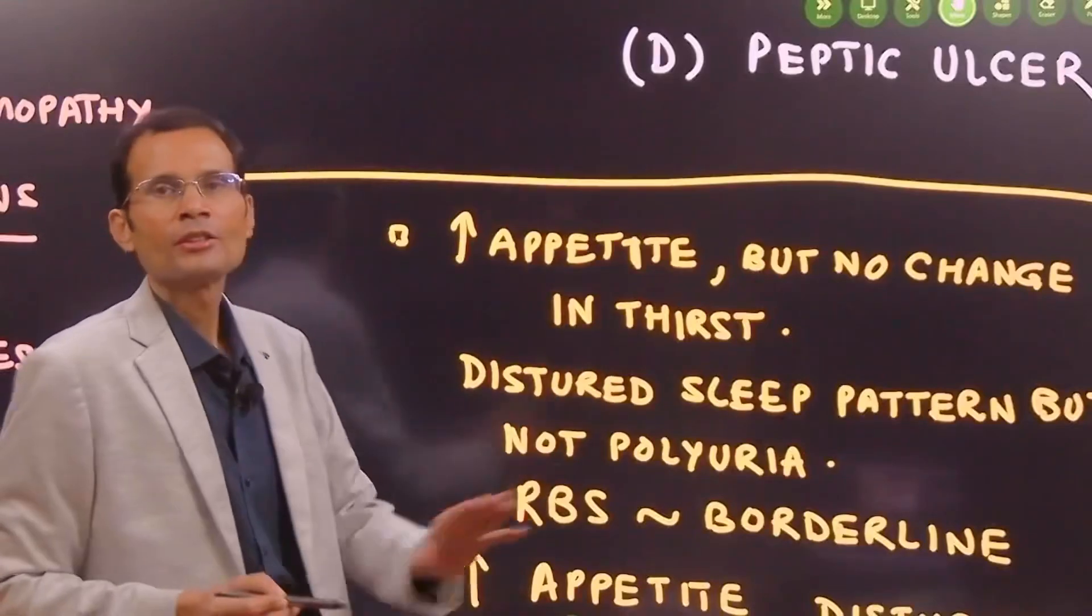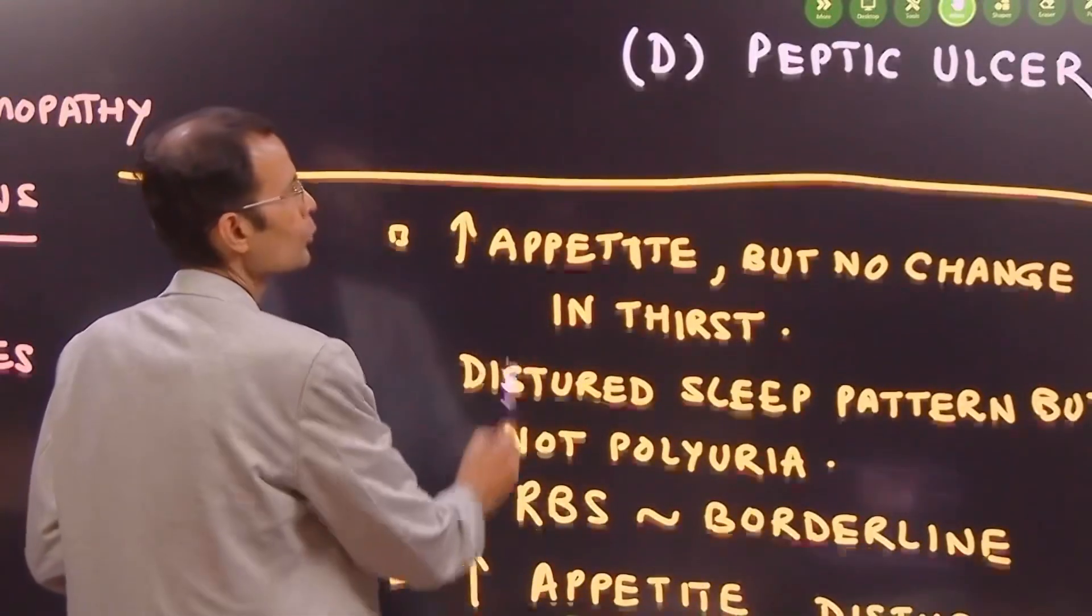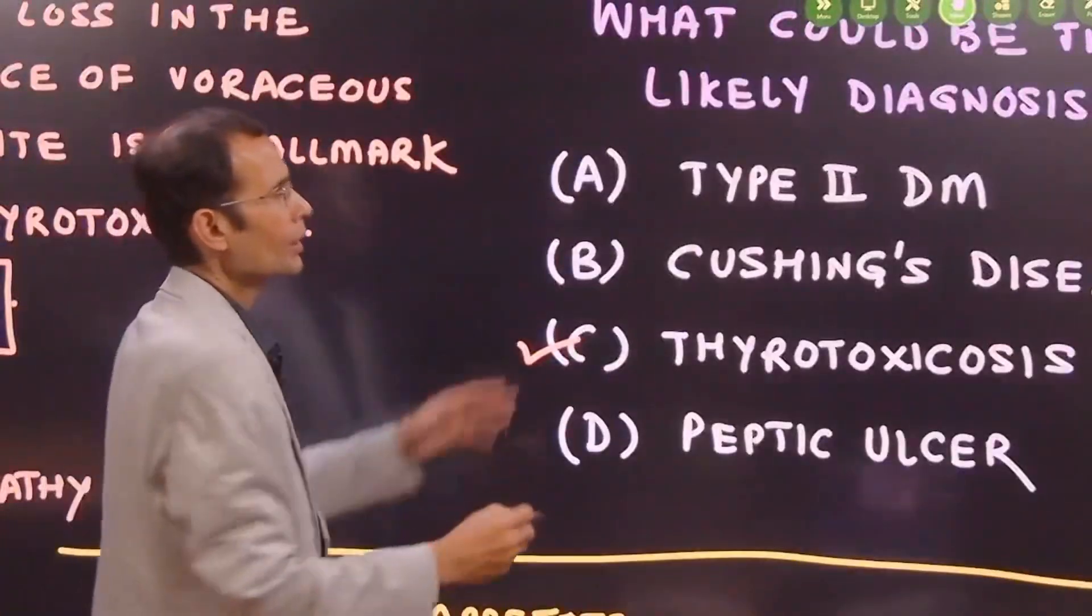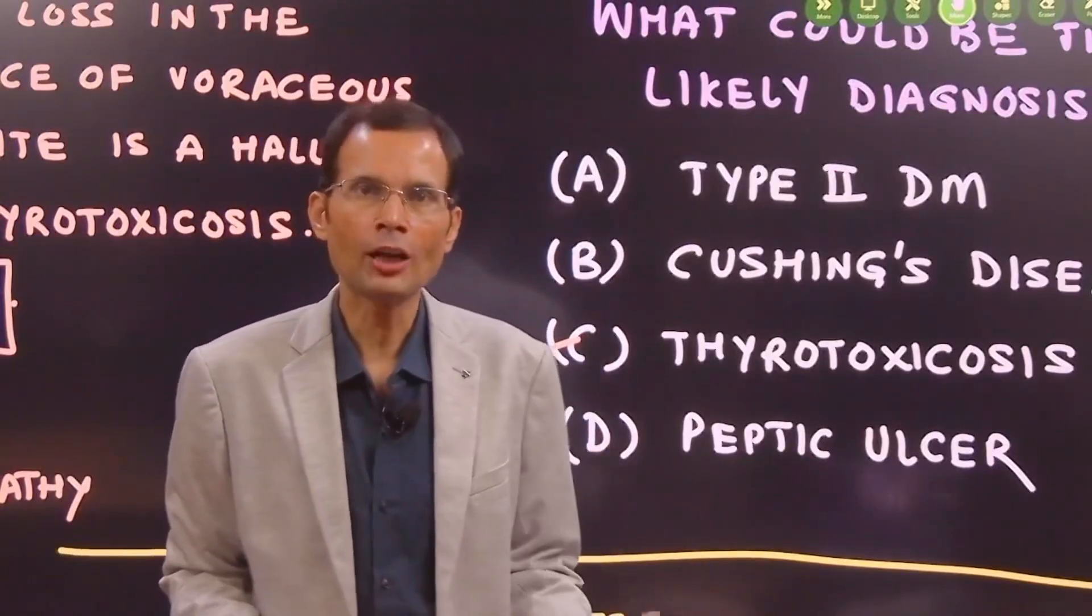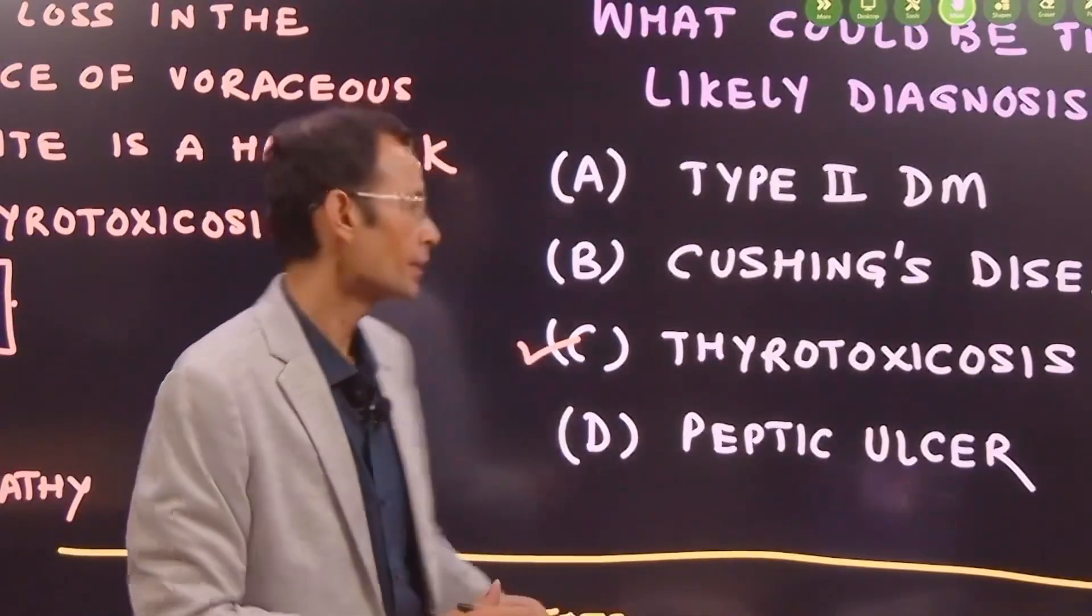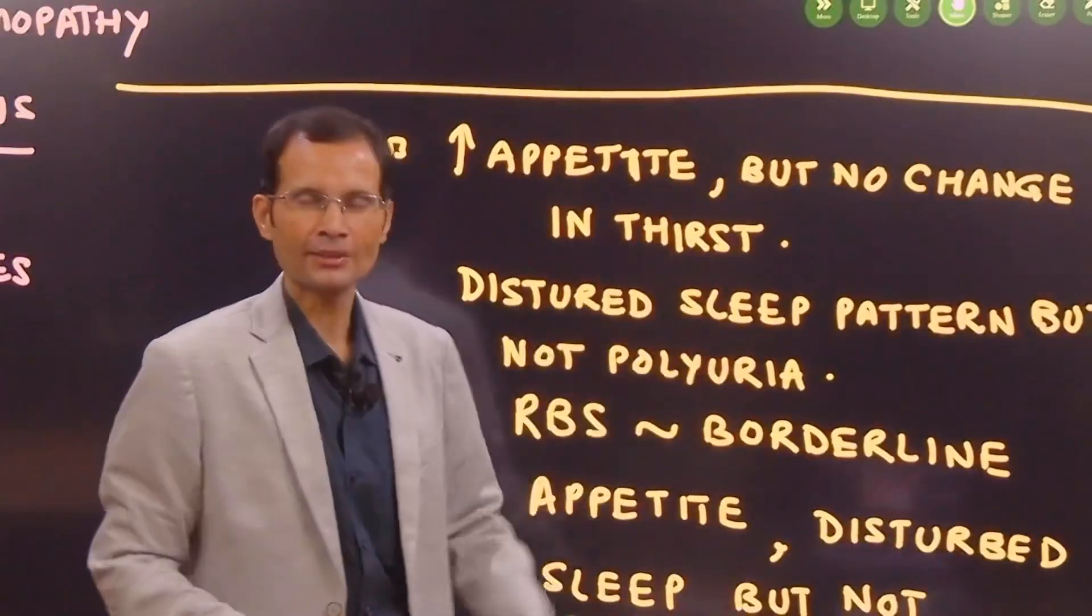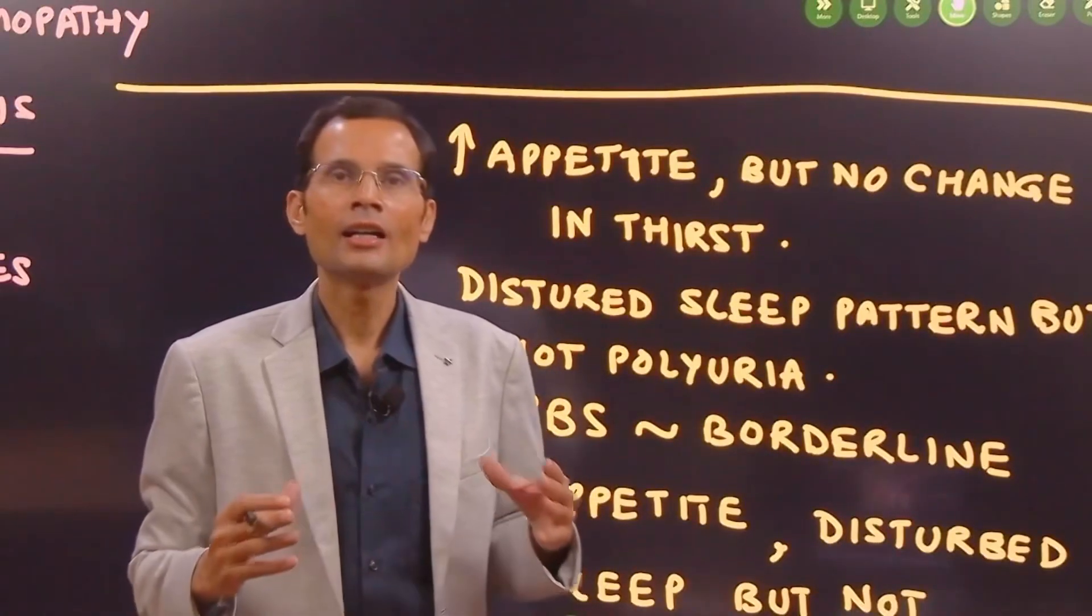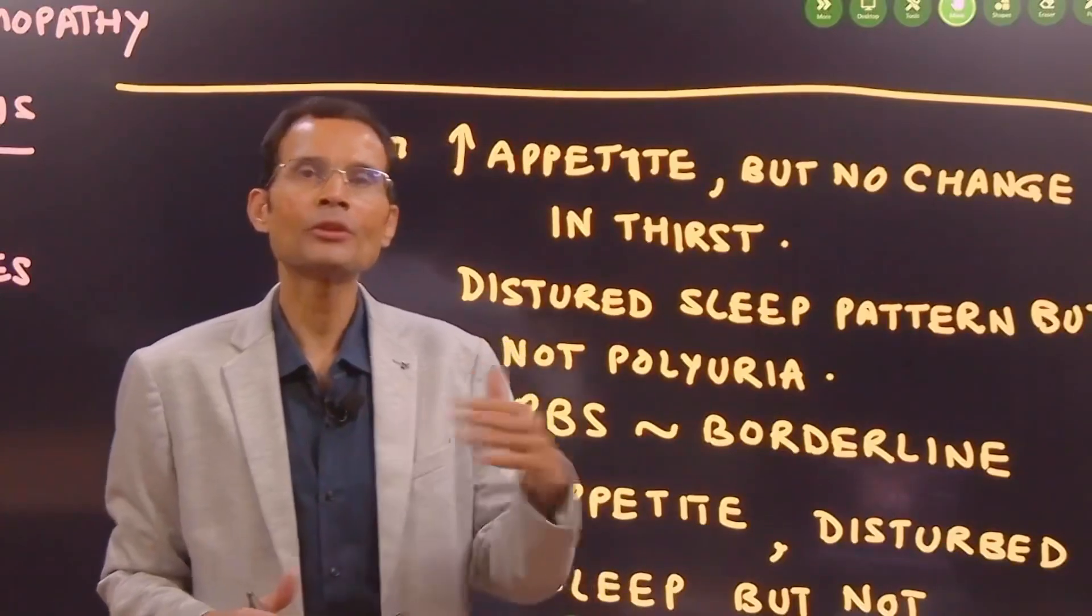There is increased appetite. Fine. In peptic ulcers, also some patients complain of increased appetite. Type 2 diabetes mellitus, there is hyperphagia. So pointing towards that. But then there is no change in the thirst. You know, the classic triad of diabetes mellitus is polyphagia, polydipsia and polyuria.